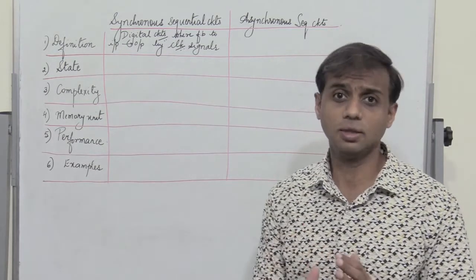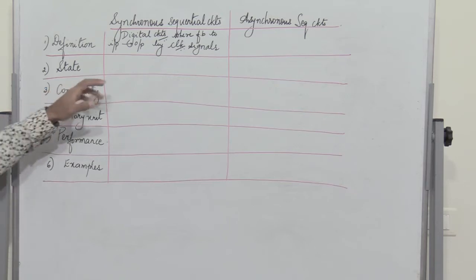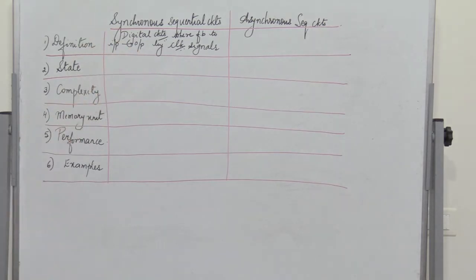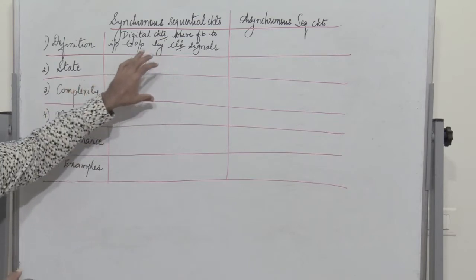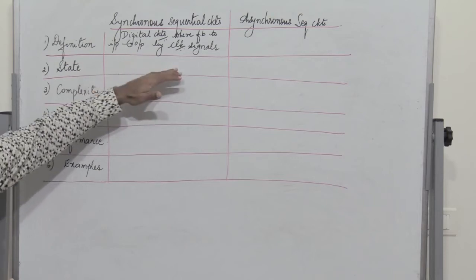First, let us see the definition. We can define synchronous sequential circuits as digital circuits wherein the feedback is given to the input to produce the output by clock signals. The feedback is given to the input for the next output generation, done by giving in clock signals. The flip-flop is triggered by a clock pulse and that produces an output.